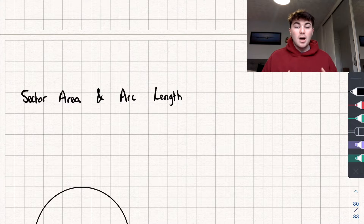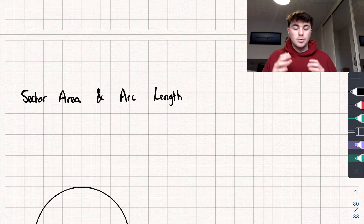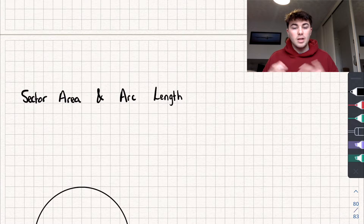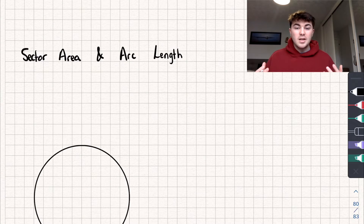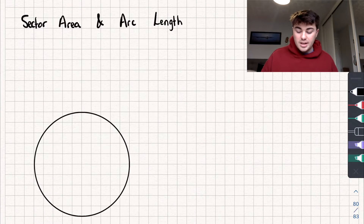I'm going to timestamp the different parts of the video, so if you just want to skip through to, say, an exam question at the end then you can. We'll start off by asking: what is a sector and what is an arc? And this is really easy.